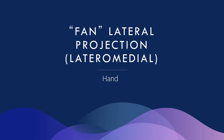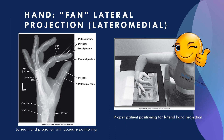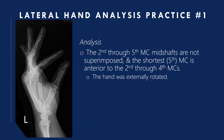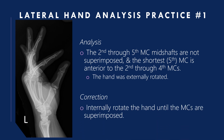Fan lateral projection — lateral-medial hand: here is an accurate positioning and projection of the lateral fan hand. Analysis practice one: the second through fifth metacarpal mid-shafts are not superimposed and the fifth metacarpal is anterior to the second through fourth. The hand was externally rotated. Correction: internally rotate the hand until the metacarpals are superimposed.